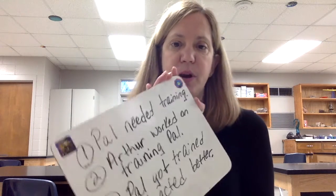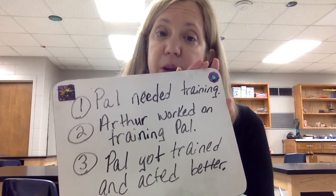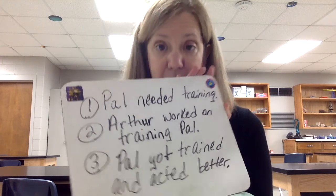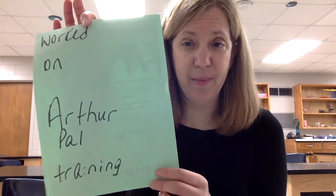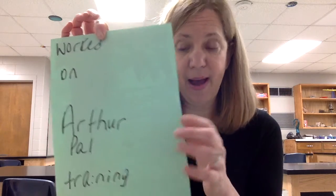So, we have our three sentences that we worked on. Powell needed training. Arthur worked on training Powell. And we know that Powell got trained and acted better. So, we're going to take sentence number two. And if your mom or dad or older sibling or whoever's helping you here, when you go to write those words, I want you to write them out of order. So, as you'll see, we have the sentence: Arthur worked on training Powell.